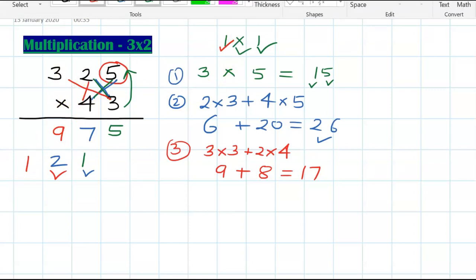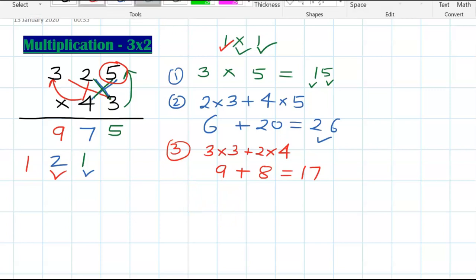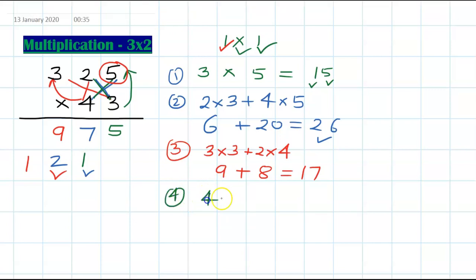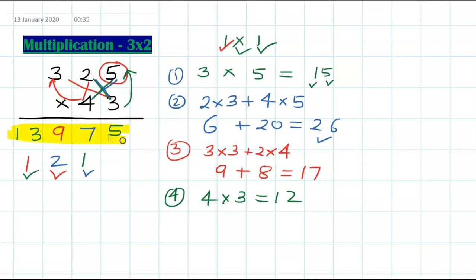Last step: multiply the leading digits — 4 times 3 — which is 12, plus carry 1 gives 13. So the answer is 13975.